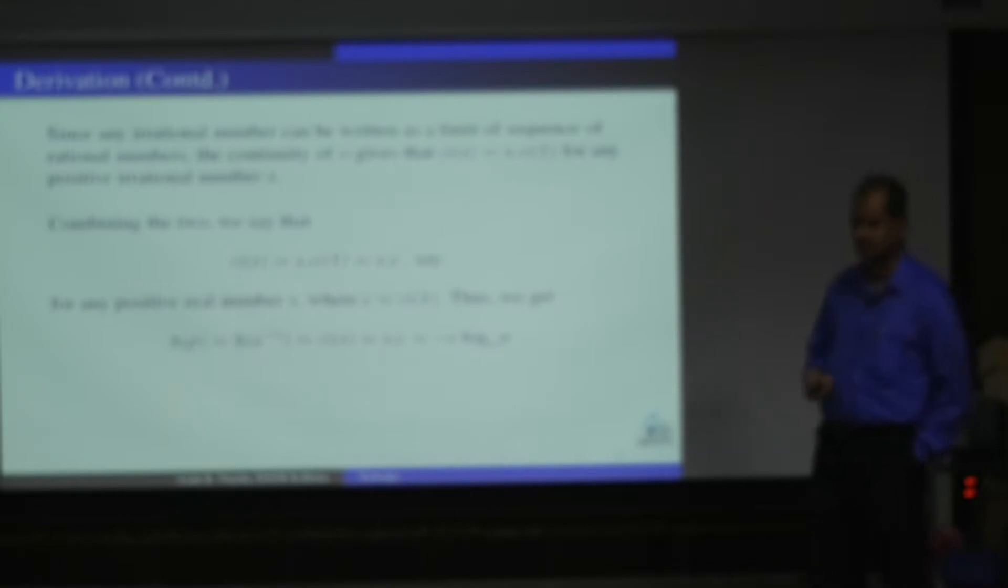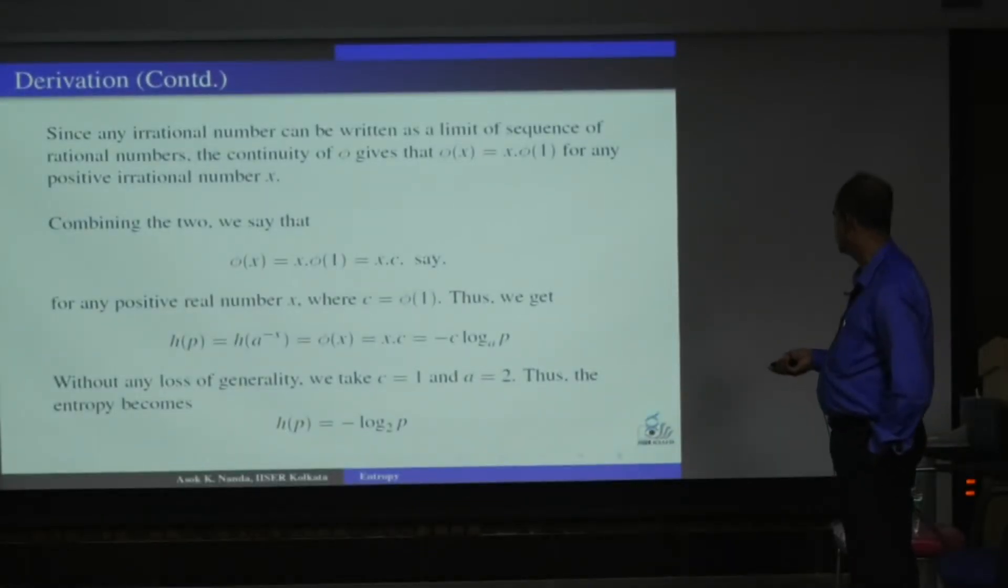This was my transformation. So eventually I am getting H(P) is minus c times log P with base some A. So any log, any base is fine. Since entropy is used in communication theory, it was started with base 2 binary. But nowadays whenever we use this in reliability, we do not take 2, we take base e. The reason is that if we take base e and base 2, this is only a difference of a constant multiple.